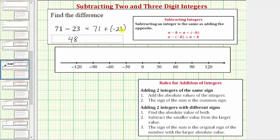But now looking at the rules for adding integers, because we have a positive plus a negative, let's find the sum using the rules for adding two integers with different signs. So the first step would be to find the absolute value of both integers. So we would find the absolute value of 71, and the absolute value of negative 23.